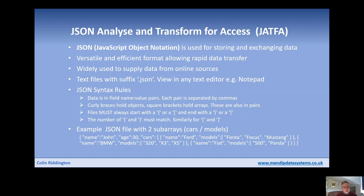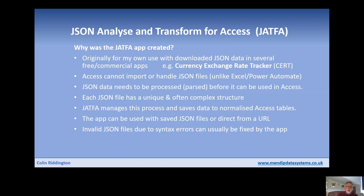JSON has its own syntax rules which are fairly adaptable. Everything is in pairs — field names and field values separated by a colon and enclosed within quotes. Each pair is separated by a comma. Curly brackets hold objects and square brackets hold arrays. The file must always start and end with the same type of bracket, and the number of opening and closing brackets must match.